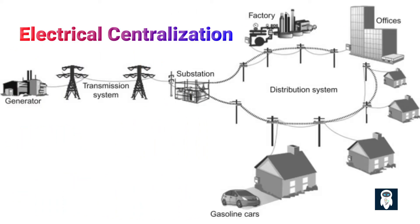Until recently, our electricity needs were primarily met through a centralized model known as the National Grid. This system relied on a few large power stations, often fueled by fossil fuels, wind, hydro, solar farms, or nuclear energy. Electricity was transmitted over long distances to homes,